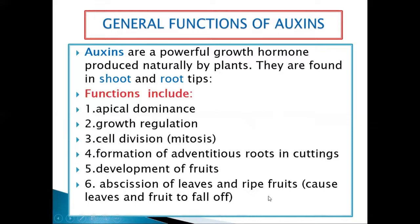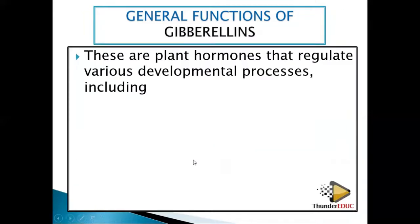Auxins are also involved in abscission — the dropping of leaves and the aging of leaves and fruits. For example, you see a nice mango on the tree and by the time you pass it the next morning, the mango has fallen. That is caused by abscission. Abscisic acid also plays a role in abscission.